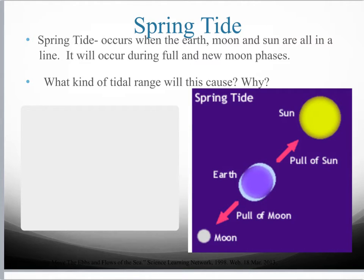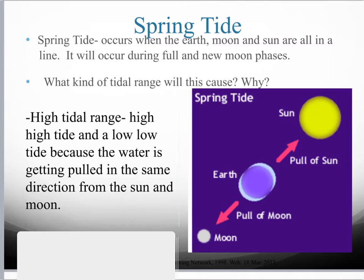Typically, the water doesn't actually move that much. What's happening is the Earth is rotating in and out of these tidal bulges. Spring tides would have a high tidal range because our high tide is going to be really high — both the moon and the sun are working together in that straight line, giving an extra pull on the water, making our high tides really high. That doesn't leave much water for the low tides, so our low tides are going to be really low. A really high number minus a really low number gives us a big tidal range.